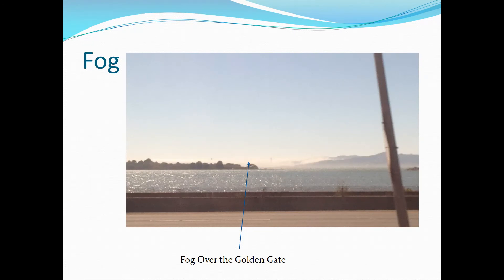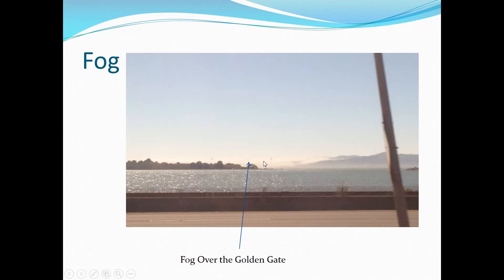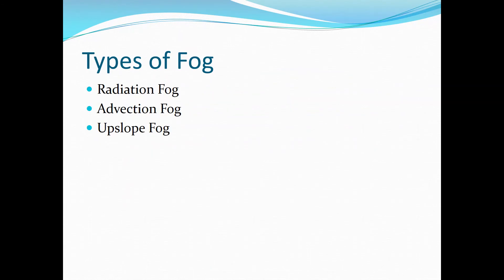The last type of cloud I'm going to talk about for the next five to ten minutes is fog. We are very, very used to fog here in the Bay Area because it happens all the time. Here's an image I took from an Amtrak train returning to the Bay Area from an internship - this is the Golden Gate Bridge, these two little pillars sticking out, covered in fog. There are actually three types of fog: radiation fog, advection fog, and upslope fog.